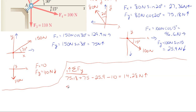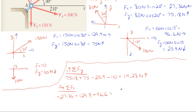Now repeating the process for x, taking rightward as positive: −27.36 + 129.9 + 96.6 + 0 = 199.14 N. The positive result means the net x force is 199.14 N to the right. So all forces combined produce a net x component of 199.14 N rightward and a net y component of 14.28 N upward.